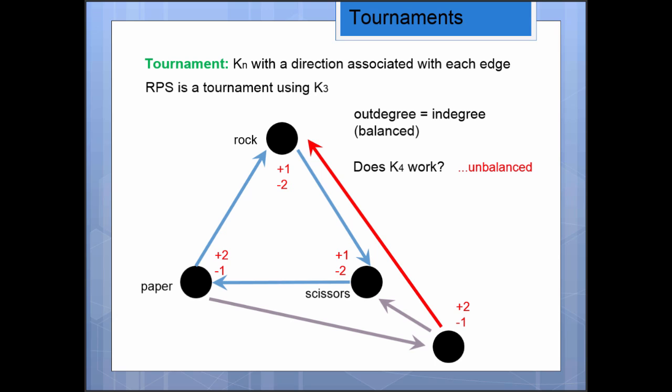And in general, you won't be able to make it balanced because of the property I mentioned. You have three other vertices, and you can't divide three up evenly into two options, into two sets.